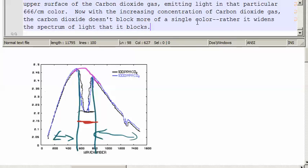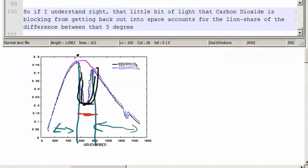Now, with the increase in concentration of carbon dioxide, the carbon dioxide doesn't block more of this individual color. Rather, it widens the spectrum of light that it blocks. So, if I understand right, that little bit of light that carbon dioxide is blocking from getting back out into space accounts for the lion's share of the difference between that 5 degree black body ideal and the 14 degrees surface temp that we actually have.